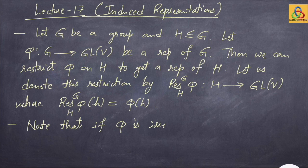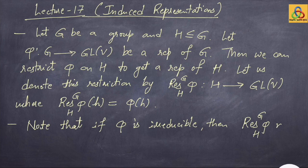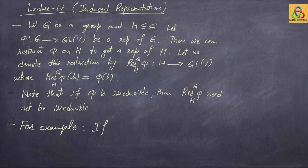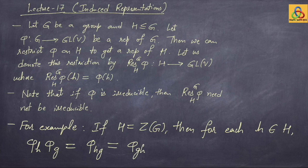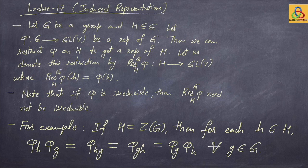Note that if phi is irreducible, then the restriction of phi from G to H need not be irreducible. For example, if you take H to be the center of G, then for each little h in H, phi of h times phi of g is the same as phi of h times g, but h is in the center, so that equals phi of g times phi of h for all g in G.